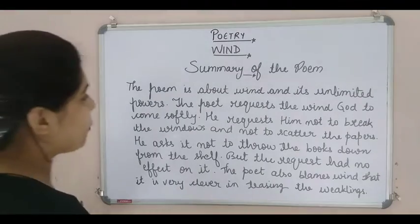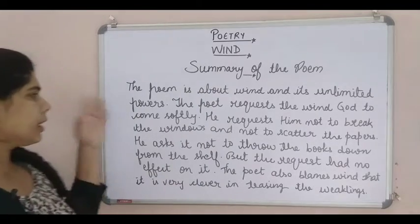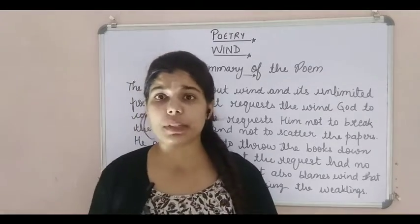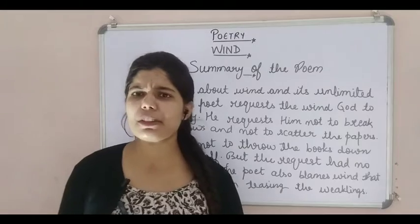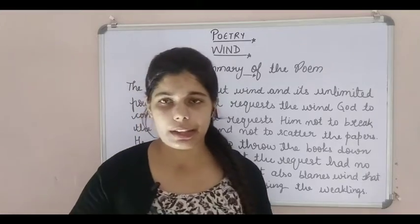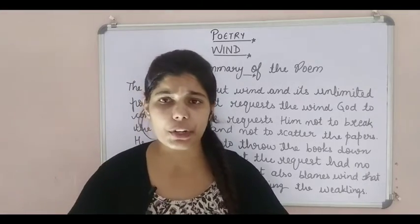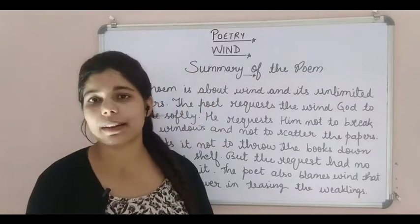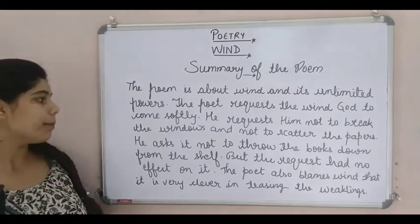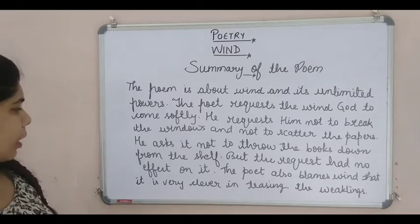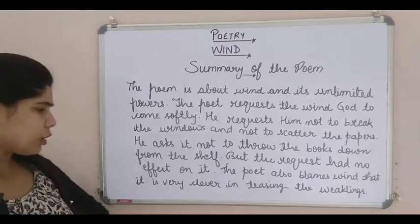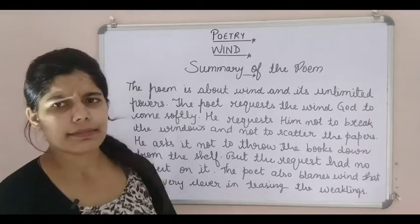Starting with the explanation of the poem, let us go through the summary. Actually the poem is about wind and its unlimited powers. In this poem, the poet is every time requesting the wind to come softly, because of the power and intensity of the wind — it was breaking down all the things. All the windows, all the shutters, and the books on the shelf — each and everything was scattered. So the poet is every time requesting the wind to come softly. He asks it not to throw the books down from the shelf, but the request had no effect on it. The poet also blames the wind, saying it is very clever in teasing the weaklings.